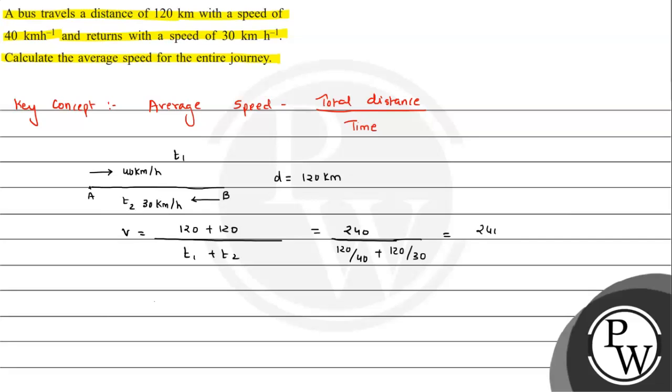So here is 240 divided by 7, and that will be giving us the answer as 34.28 km per hour. So this is the answer for the question. I hope you understood the solution. All the best.